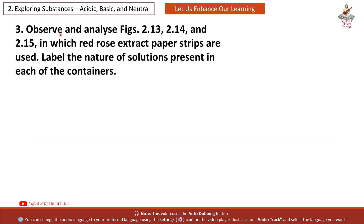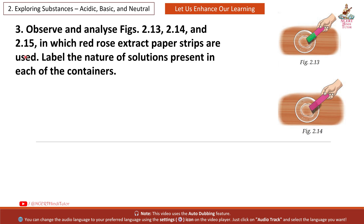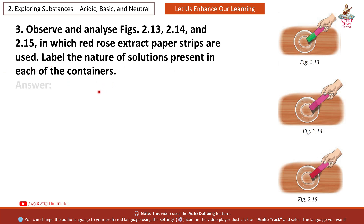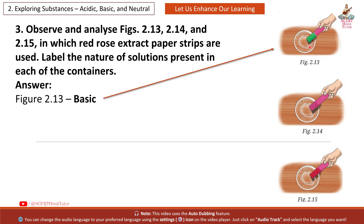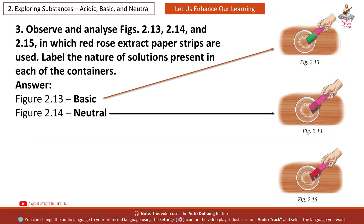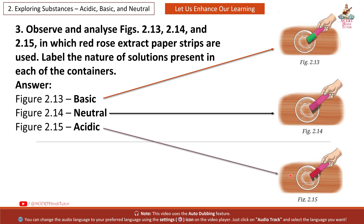Question 3: Observe and analyse figures 2.13, 2.14 and 2.15 in which red rose extract paper strips are used. Label the nature of solutions present in each of the containers. Answer: Figure 2.13 — Basic, as the red rose extract paper turns green. Figure 2.14 — Neutral, as the colour of red rose extract paper remains the same. Figure 2.15 — Acidic, as the red rose extract paper turns red.